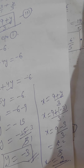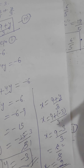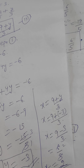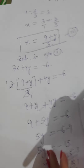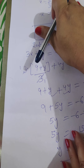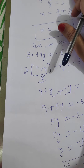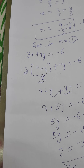For homework, you have exercise 3.3, question 1: solve the following pairs of linear equations by the substitution method. There are 6 parts given — you have to solve all of them. If there is any problem, let me know tomorrow. Tell me whether the question was solved or not. Okay, thank you, take care.